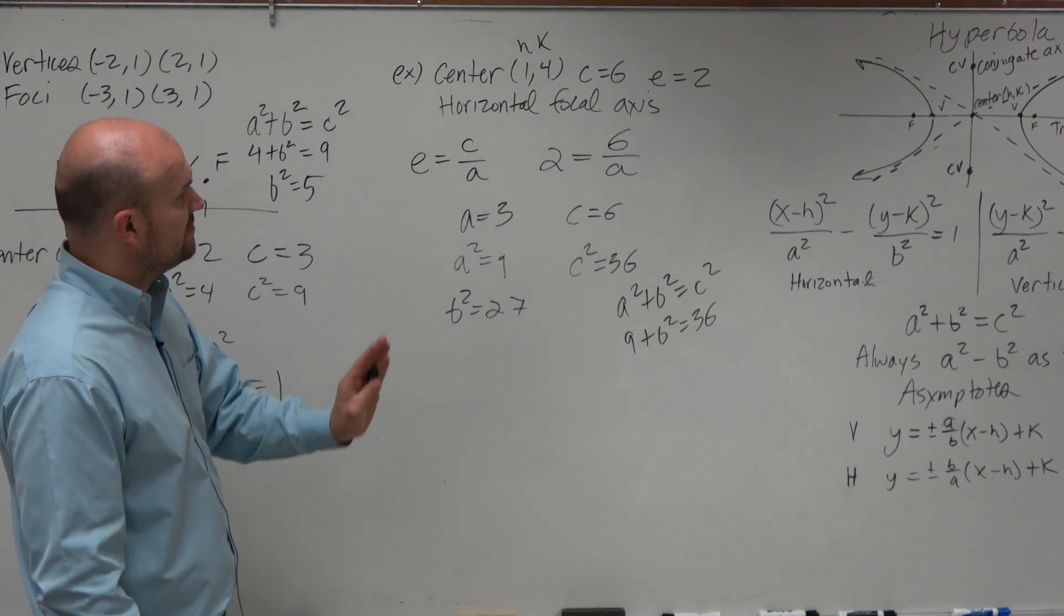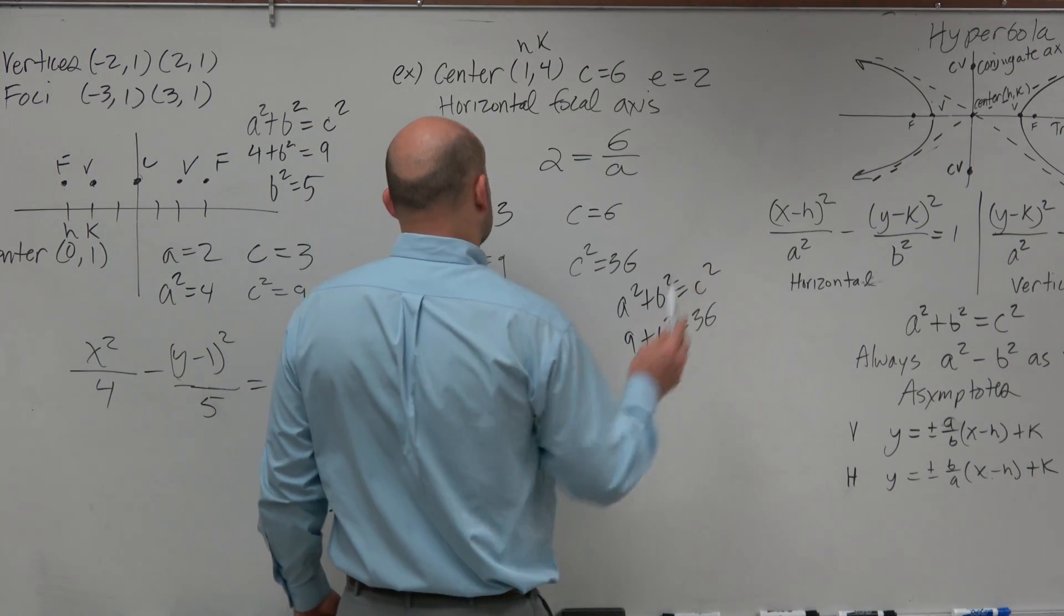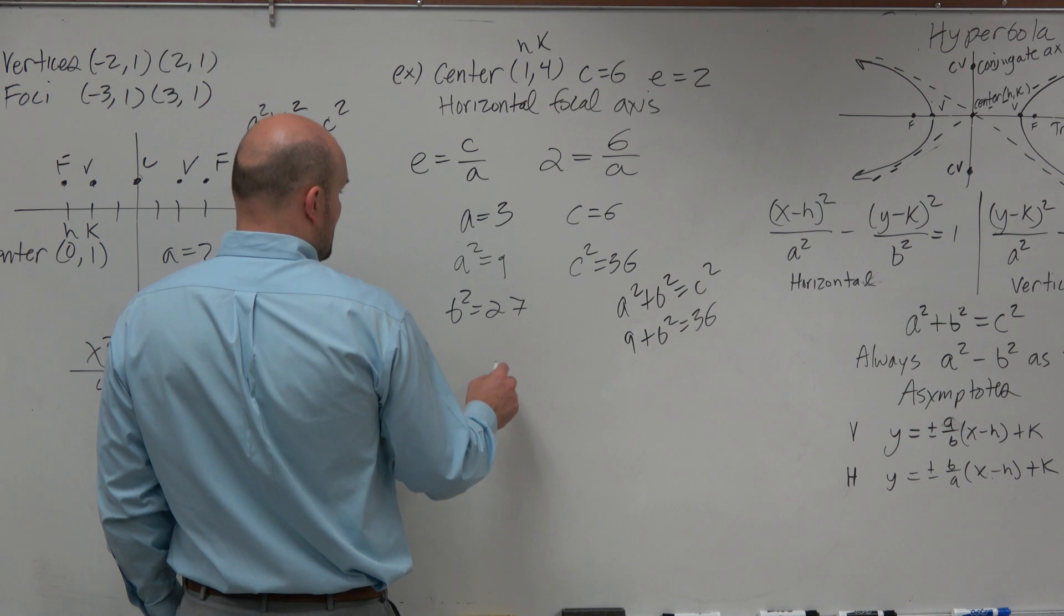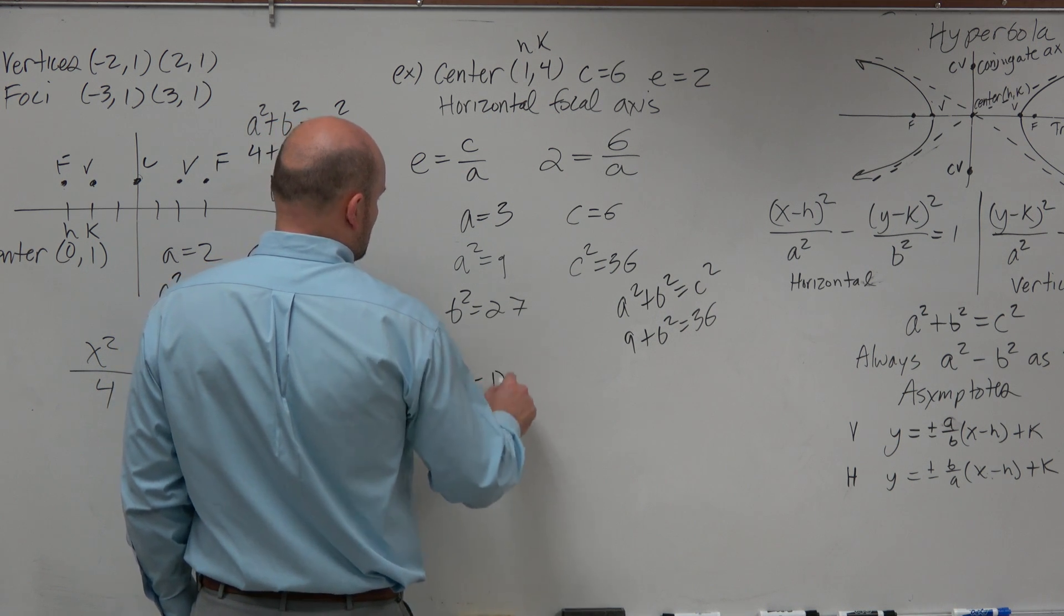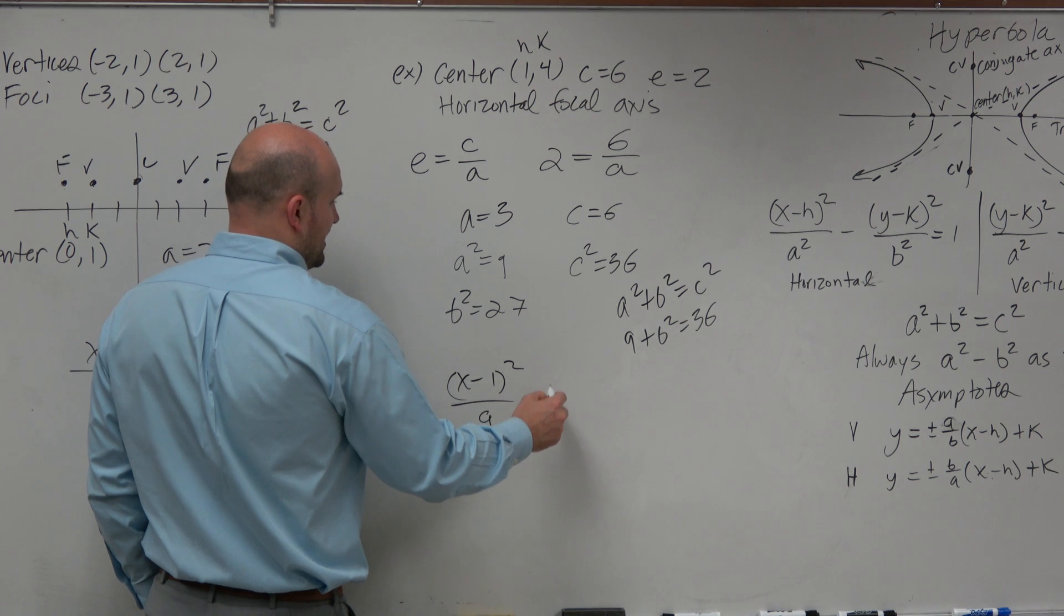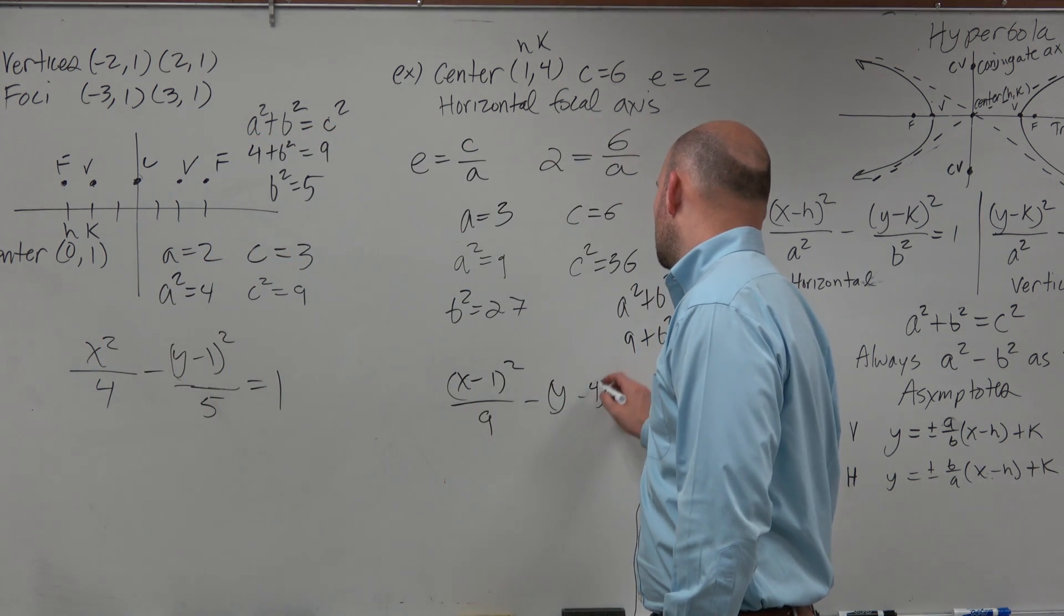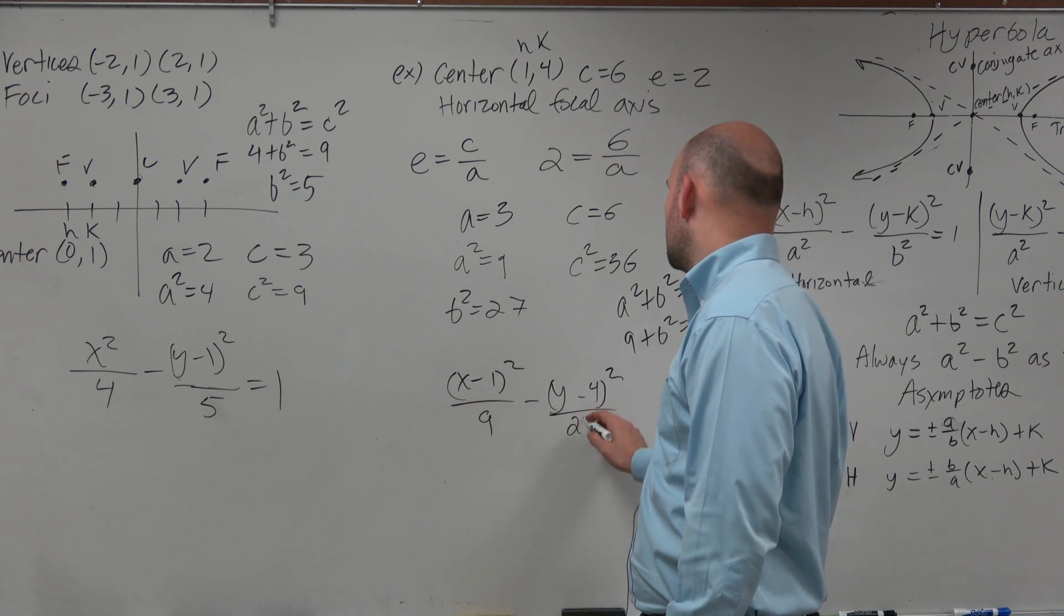It says it's a horizontal focal axis. So again, this is the exact same formula. We're going to keep on doing this. I should have changed that up. Sorry about that. So this will be x minus 1 squared over my a squared, which is 9, minus y minus 4 squared over 27.